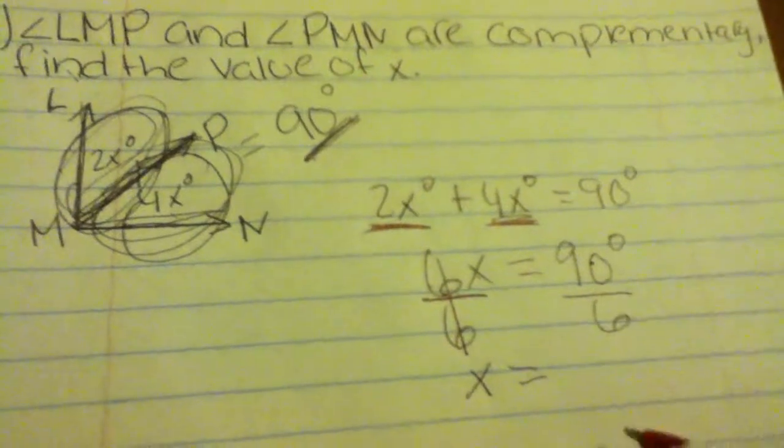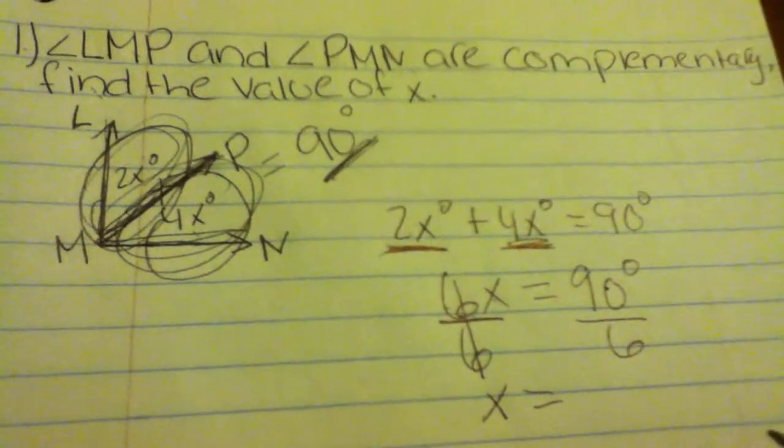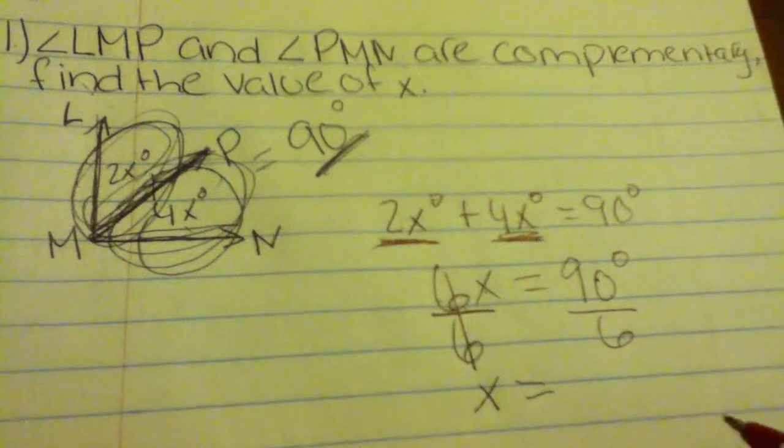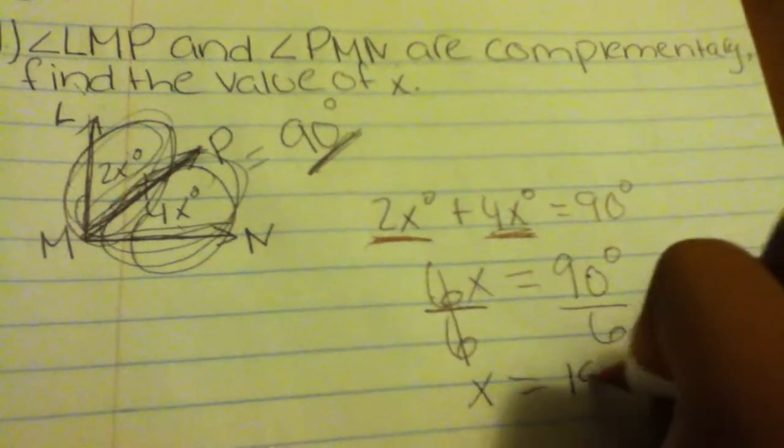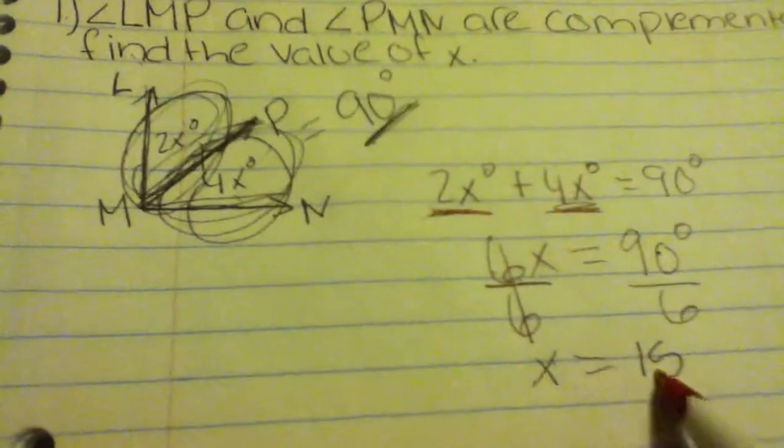So you divide 90 by 6 and you get 15. So x equals 15, you're done, you solved for your equation. But just in case you don't think it's correct you want to make sure.